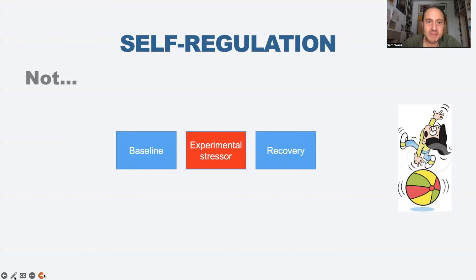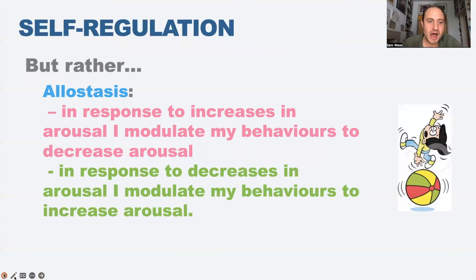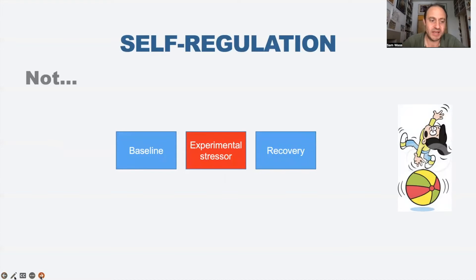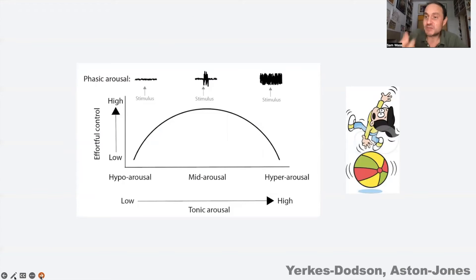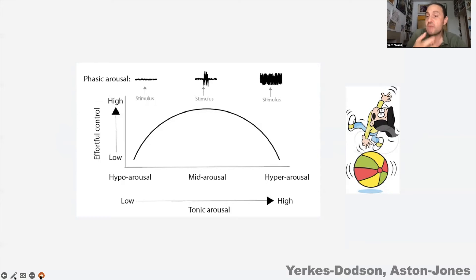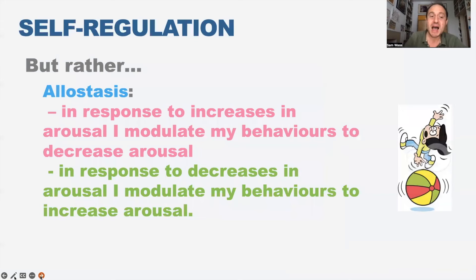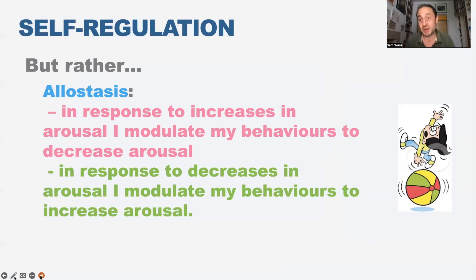Rather than thinking about self-regulation as an external stressor coming in that we have to control, when we think about it in real-world settings we're thinking about allostasis. Optimal cognitive function happens when we're somewhere between over-aroused - running around, bouncing off the walls - and hypo-aroused - sitting there feeling drowsy, falling asleep. Allostasis is the active process we use to maintain ourselves in this optimal intermediate state. In response to increases in arousal, I modulate my behaviours to decrease arousal, and in response to decreases in arousal, I modulate my behaviours to increase it.